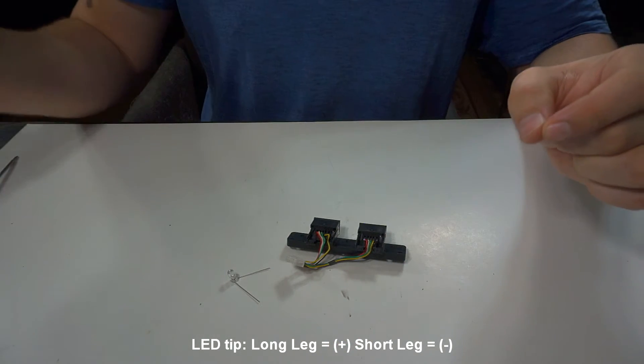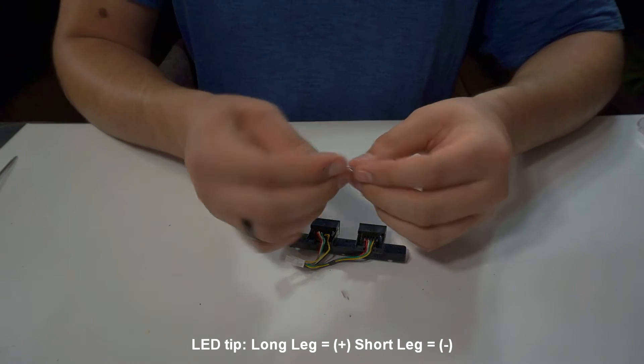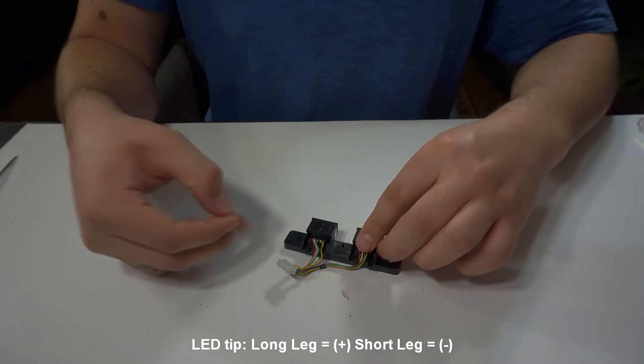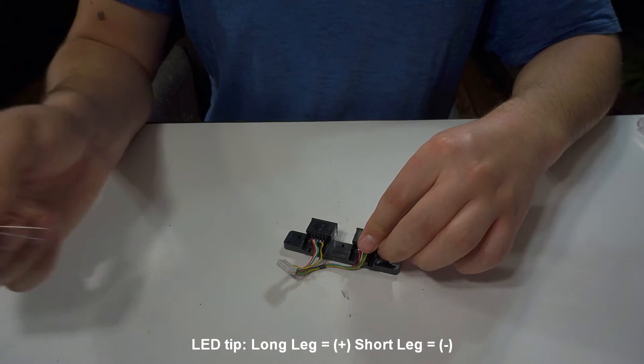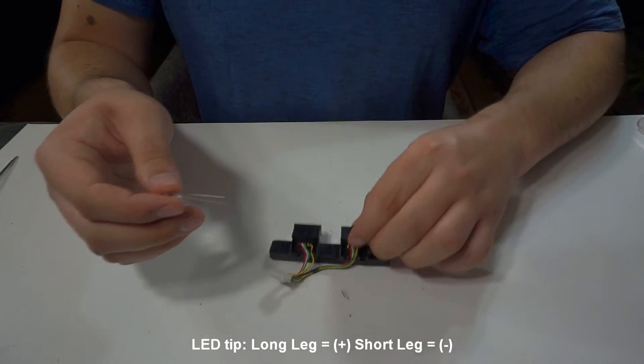So go ahead and connect your negative from your LED to the black wire pad on the controller port.